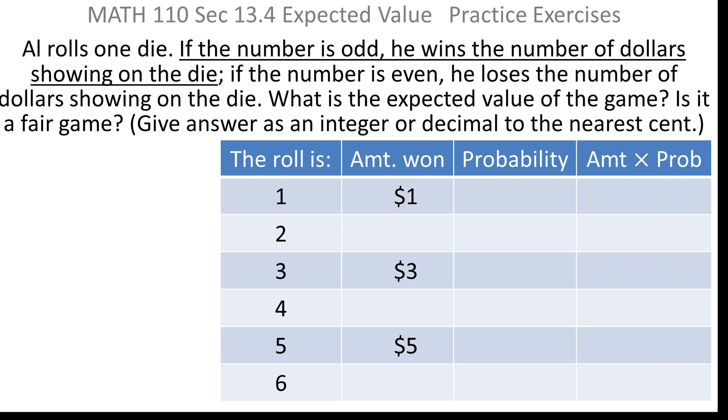Now, it says that if the number is odd, you win the number of dollars showing on the die. So if the roll is odd, like one, three, or five, you win that many dollars. So a roll of one wins you a dollar. A roll of three wins you three dollars. A roll of five wins you five dollars.